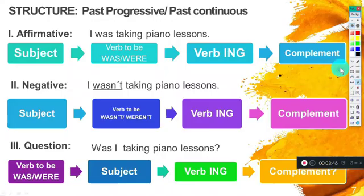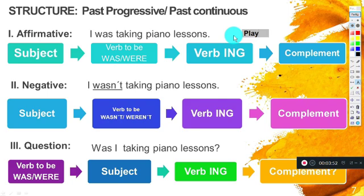For example, the verb 'play' means jugar. If I want to say 'jugando,' we add -ing: playing. It's important that -ing goes at the end of each verb, because in the past continuous we are expressing an action that was continuing in the past.